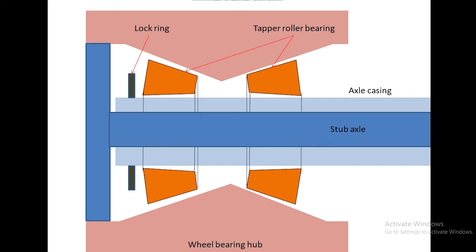Stub axle is coupled with the bearing housing with spline connection so that both are free to move relatively in axial direction and transmit torque to wheel which is bolted to the bearing hub.